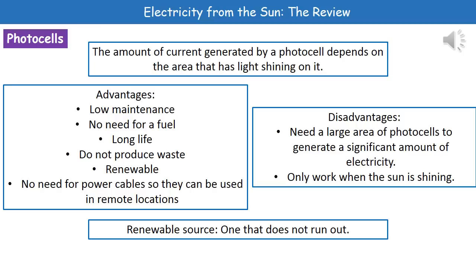What we find is that the amount of current generated by a photocell depends on the area that has light shining on it. Now we've got a few advantages and disadvantages that we need to know about our photocells.